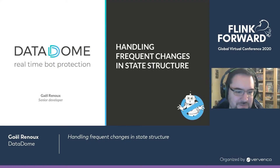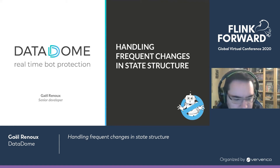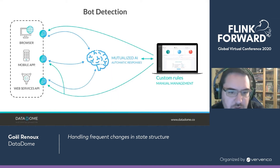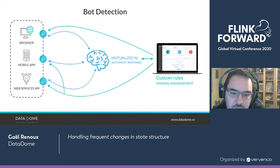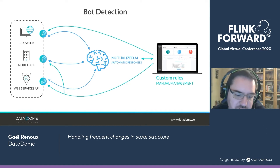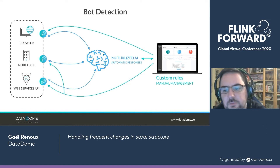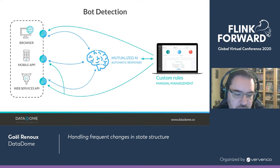Hello everyone. My name is Gael Renaud. I'm going to talk today about handling frequency changes in state structure. I'm from Danadoom — a bot detection company based in Paris. We're using Flink for our streaming engine to handle updates to our model. We receive HTTP requests and use Flink to update our model to tell us whether those requests are coming from a bot or not.